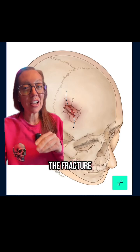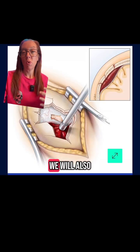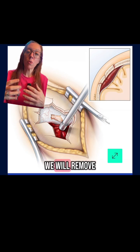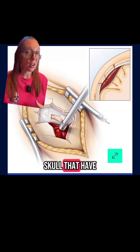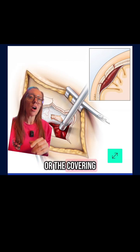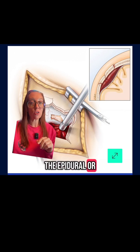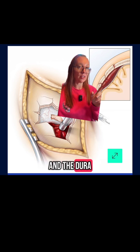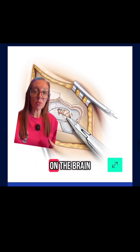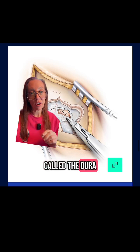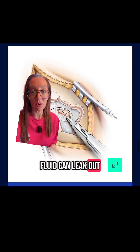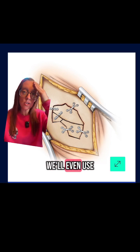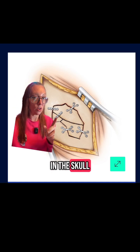First, we will open the skin overlying the fracture and often incorporate the laceration into that incision. We will clean up any soft tissue that's been damaged, like cleaning up the skin and the wound itself. When we get down to the skull fracture, we will remove and often have to drill off components of the skull that have been damaged by the fracture. We will then inspect the dura and evacuate any clot in the epidural or subdural space — as you see here, this is an example of an epidural hematoma between the skull and the dura. After removing the fragmented skull and evacuating the clot, we will sew up the dura in a watertight fashion so no spinal fluid can leak out. Once that's done, we will plate the skull back, and if any fragments of bone have been contaminated, we'll use a steel or metal plate to cover that hole in the skull. Then we close the wound.